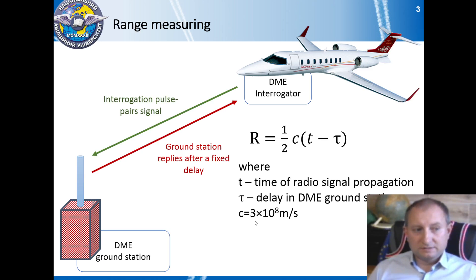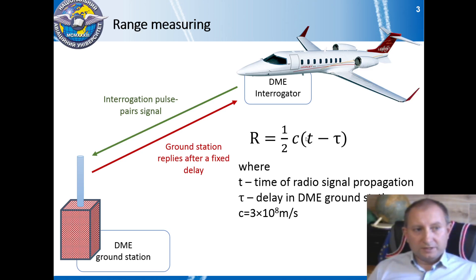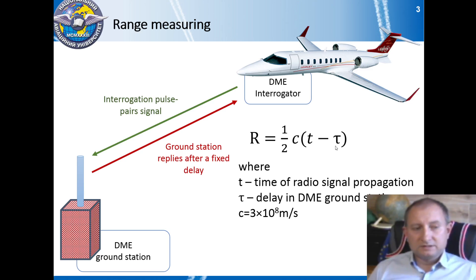In this equation, C is the speed of radio wave propagation, T is the time of radio signal propagation while being onboard the aircraft, and tau is the delay in the DME ground station.